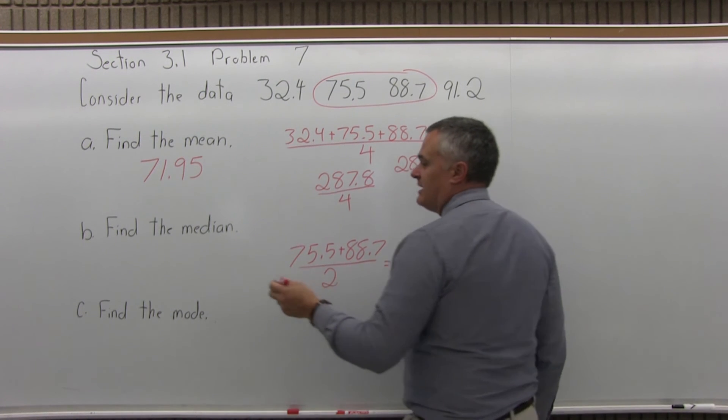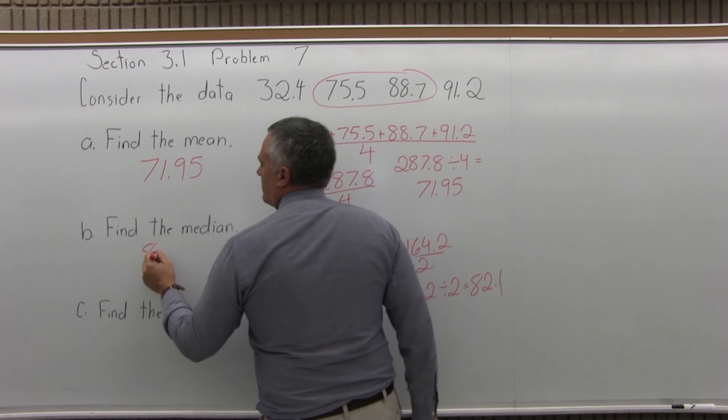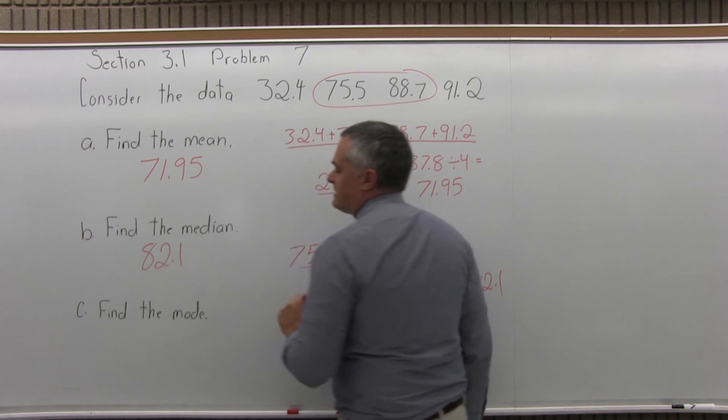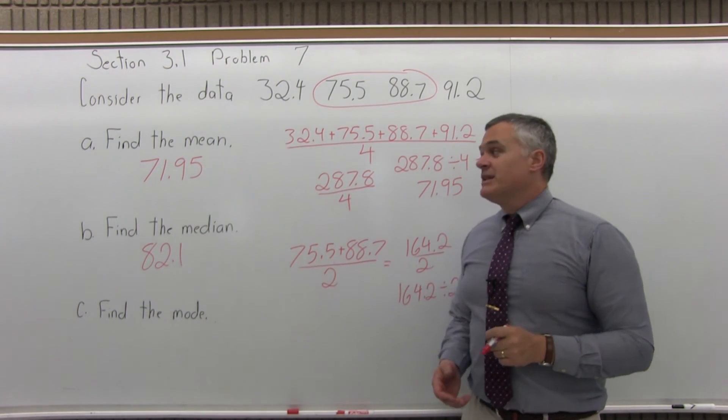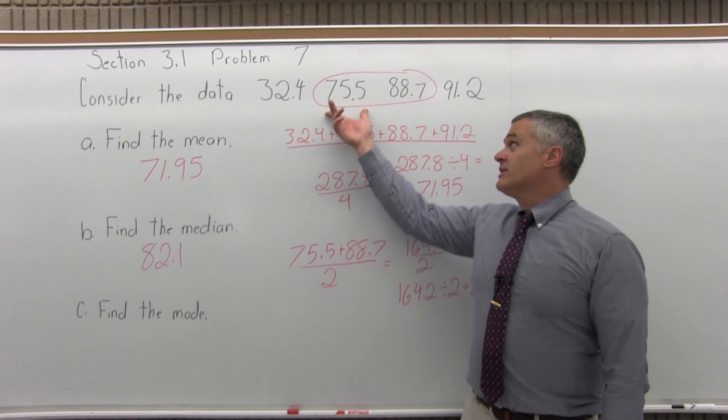164.2 divided by 2 equals 82.1. So that's the median or the middle value of the list. And now, finally, the mode. The mode is the most common data value. Well, if you look, nothing is the most common.